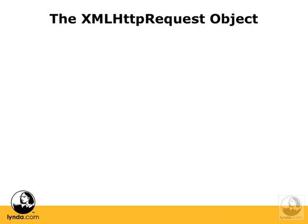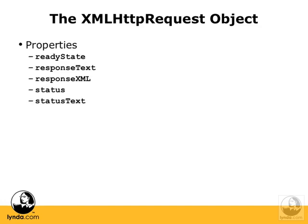Now, the XMLHttpRequest itself — it's JavaScript, so it's an object. Objects, as we know, contain properties. Here are the ones that XMLHttpRequest has, and we'll be covering these in much more detail over the next few lessons. Properties are ReadyState, ResponseText, ResponseXML, Status, and StatusText.